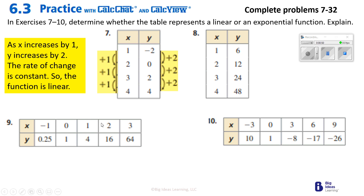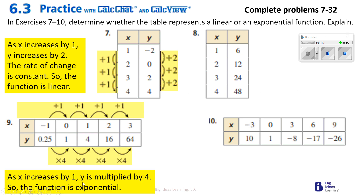Number 9: x is being increased by 1 again. But on the y side, 2.5 goes to 1. If it was adding, it would have to add 0.75, but 1 plus 0.75 would be 1.75, not 2. So it looks like they multiplied by 4. The easier way: 1 divided by the number gives you the multiplier, so that's 4. Then 1 times 4 is 4, 4 times 4 is 16, 16 times 4 is 64. So as x increases by 1, y is multiplied by 4, so the function is exponential.